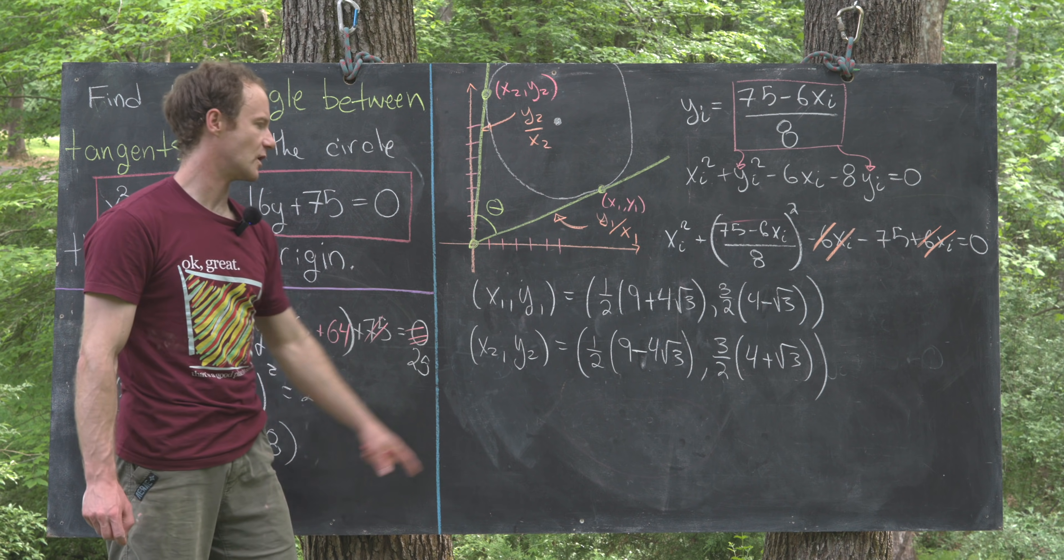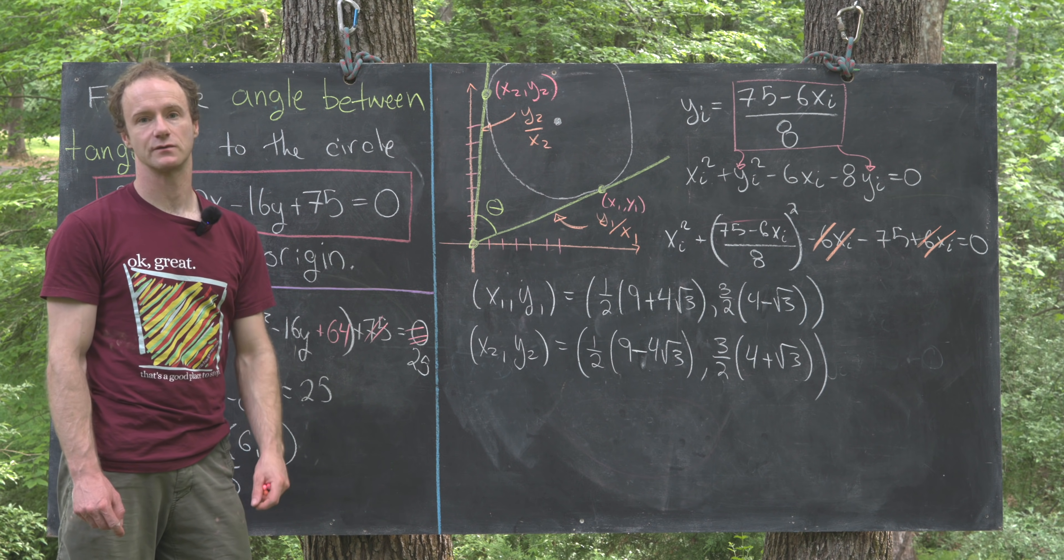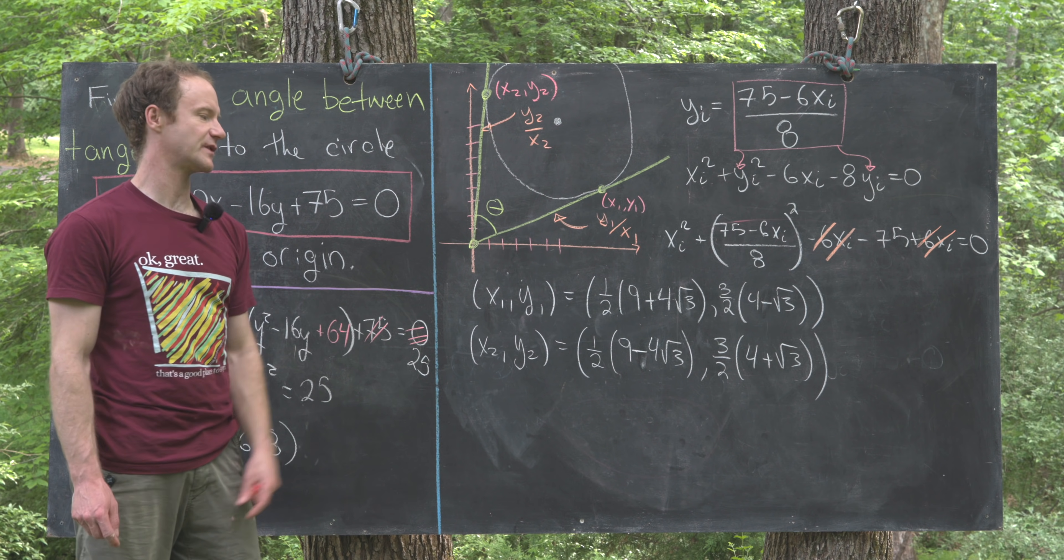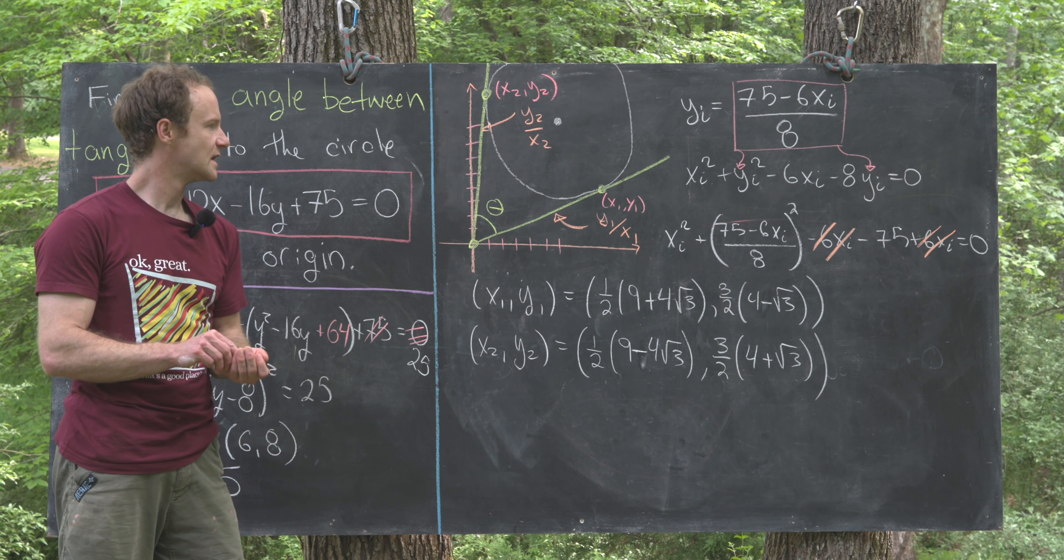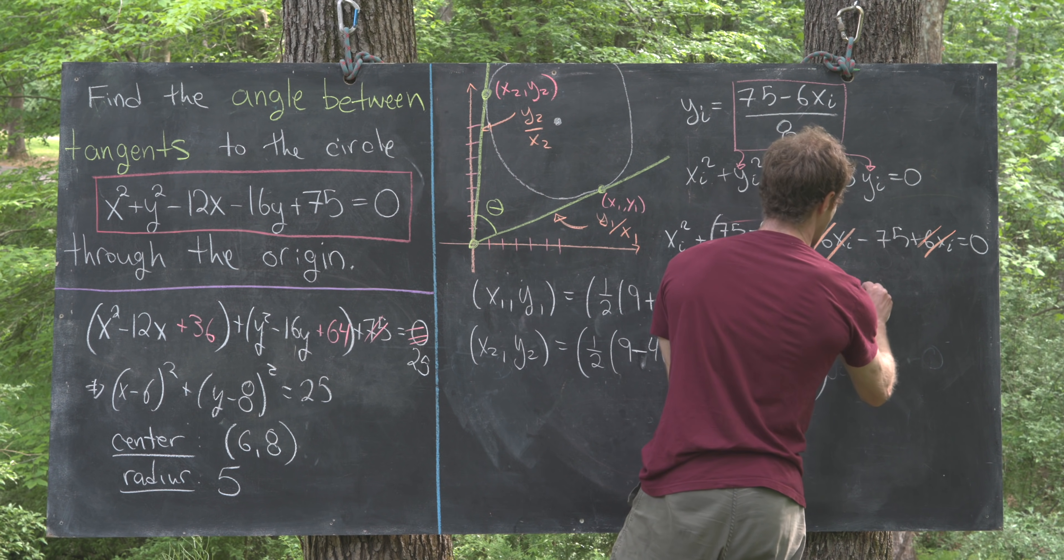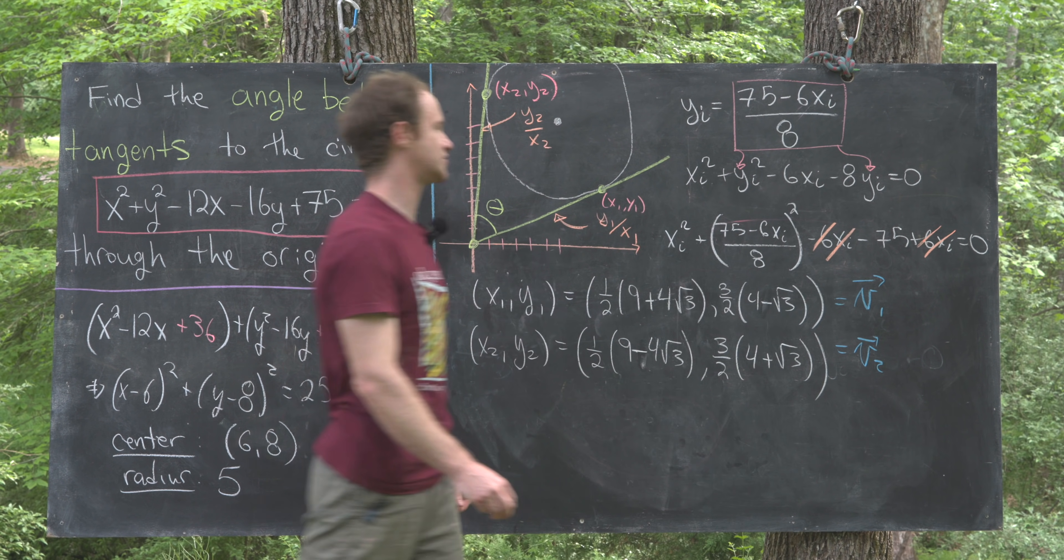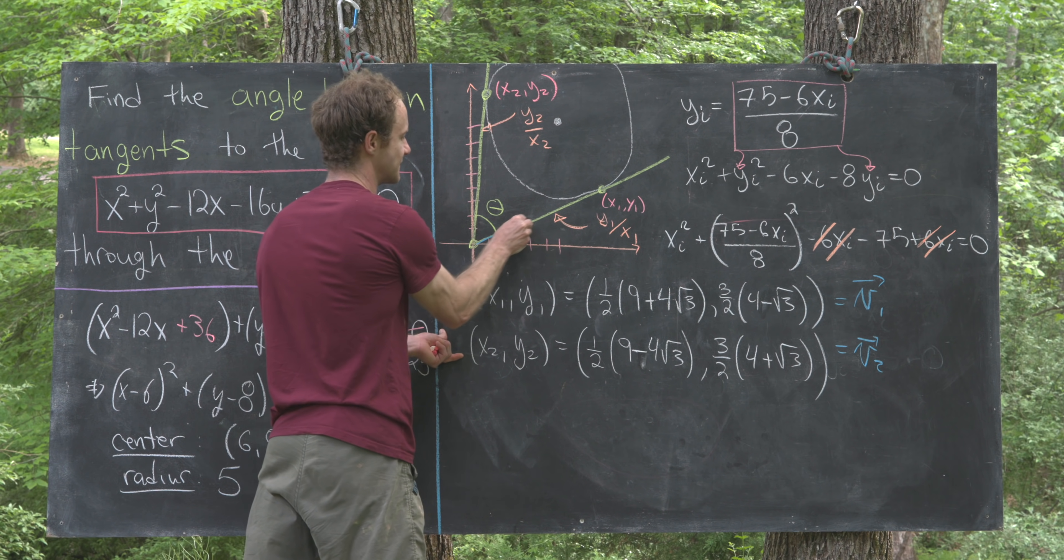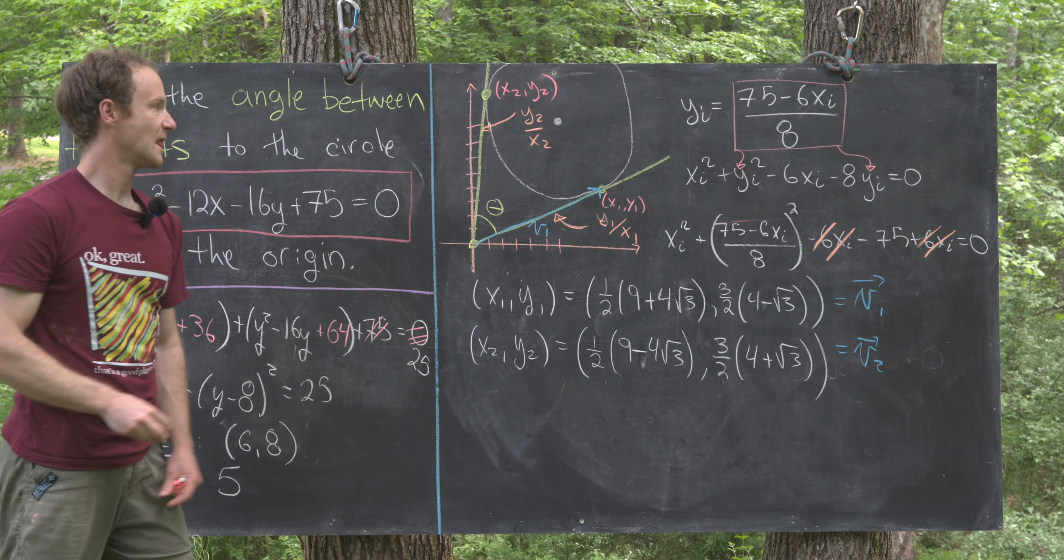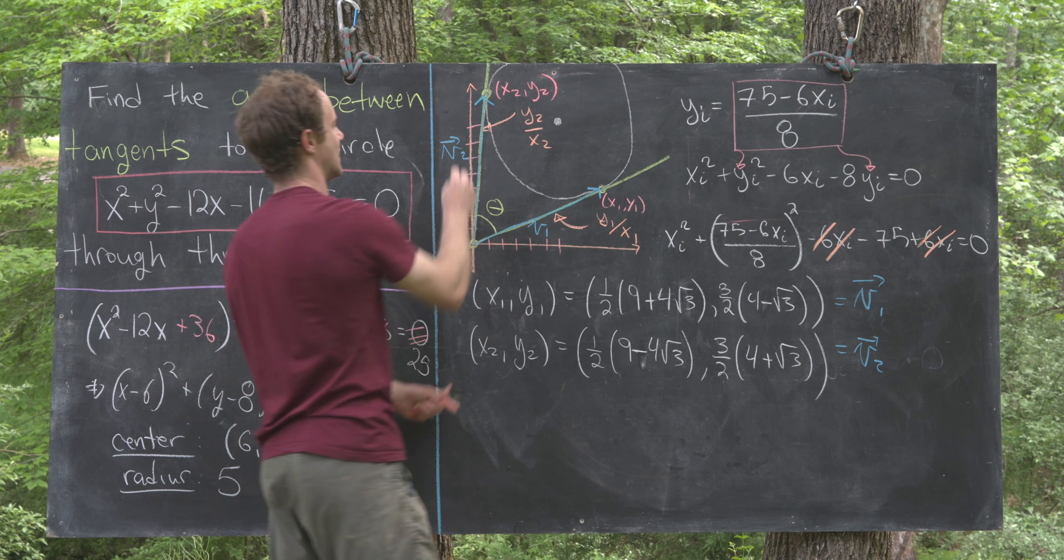Notice x1, y1 is half of 9 plus 4 root 3 comma 3 halves times 4 minus root 3, and x2, y2 is essentially the same just with the radical conjugate in both parts. Now let's see where we can go from here. I would think about this as being a vector—maybe this is vector v1 and this second one as vector v2. That makes vector v1 the vector pointing in this direction and vector v2 the vector pointing in this line's direction. In other words, the vectors defining our two tangent lines.